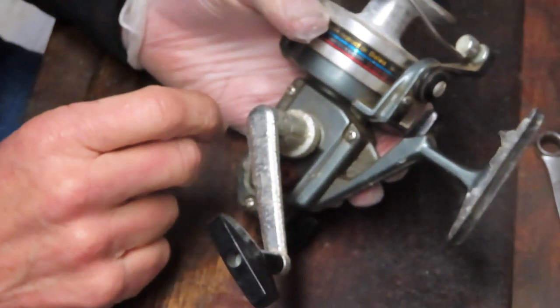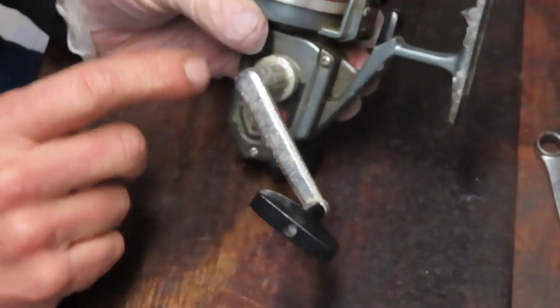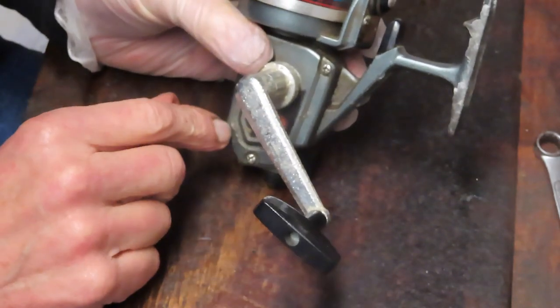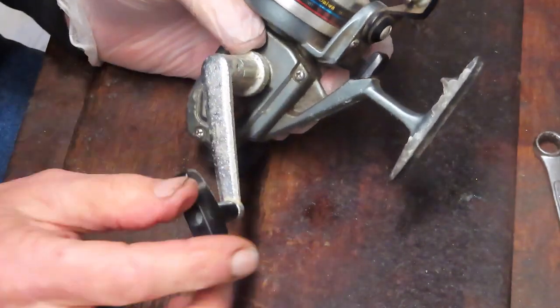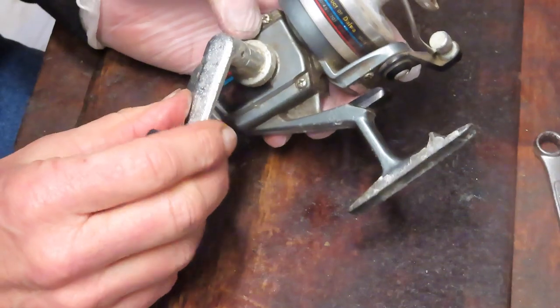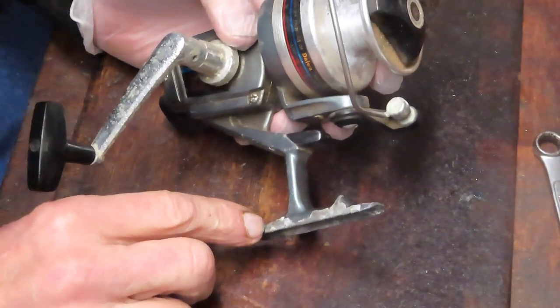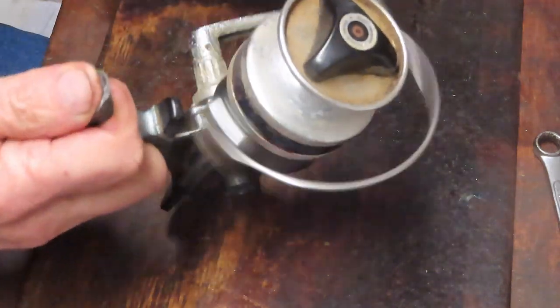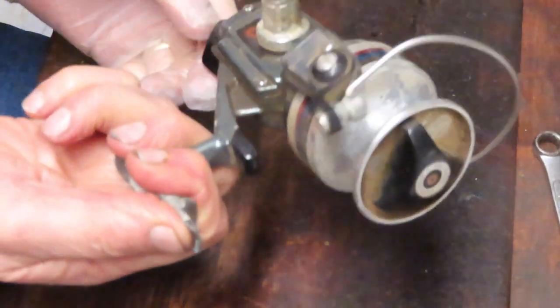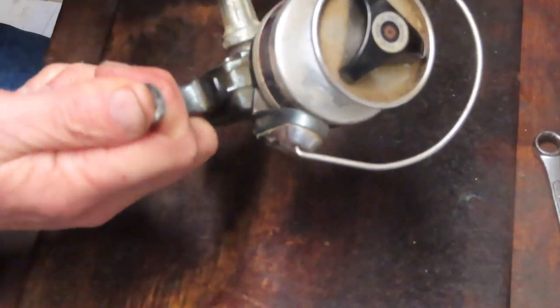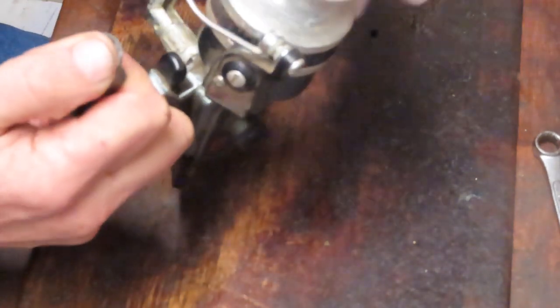This one's got significant pitting on the handle - not unusual for the salt water environment we're in - and paint loss on the reel foot. But other than that, it's okay. I've checked the anti-reverse override and it's functioning properly.